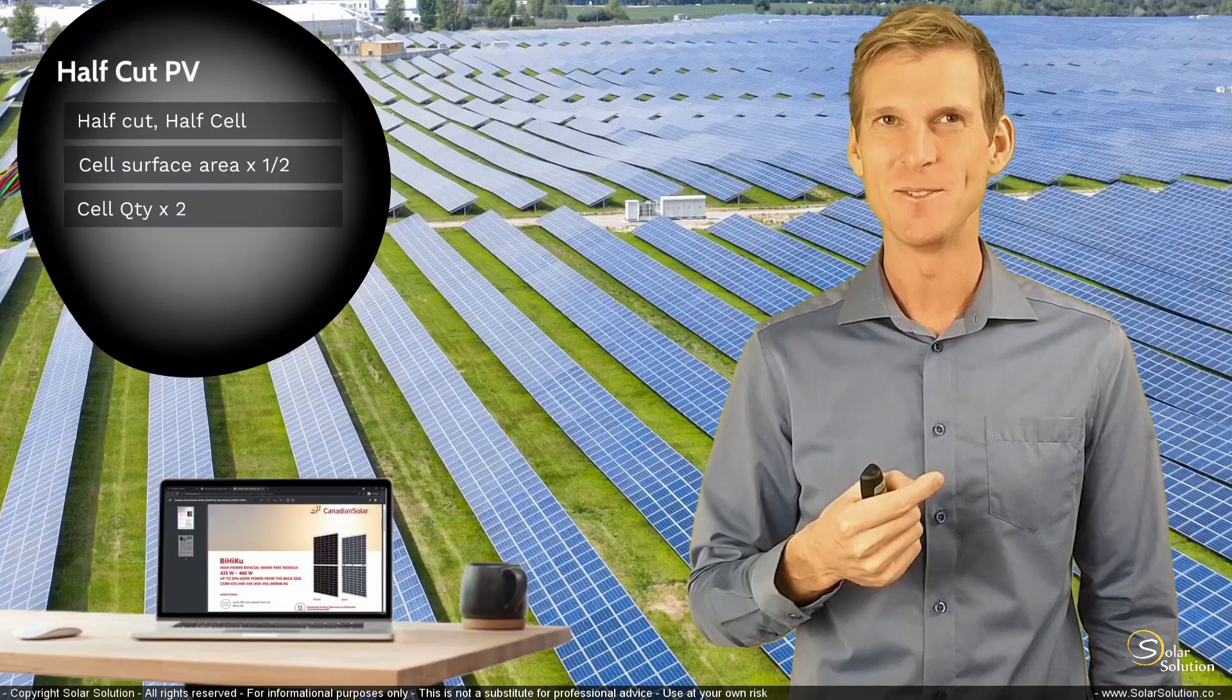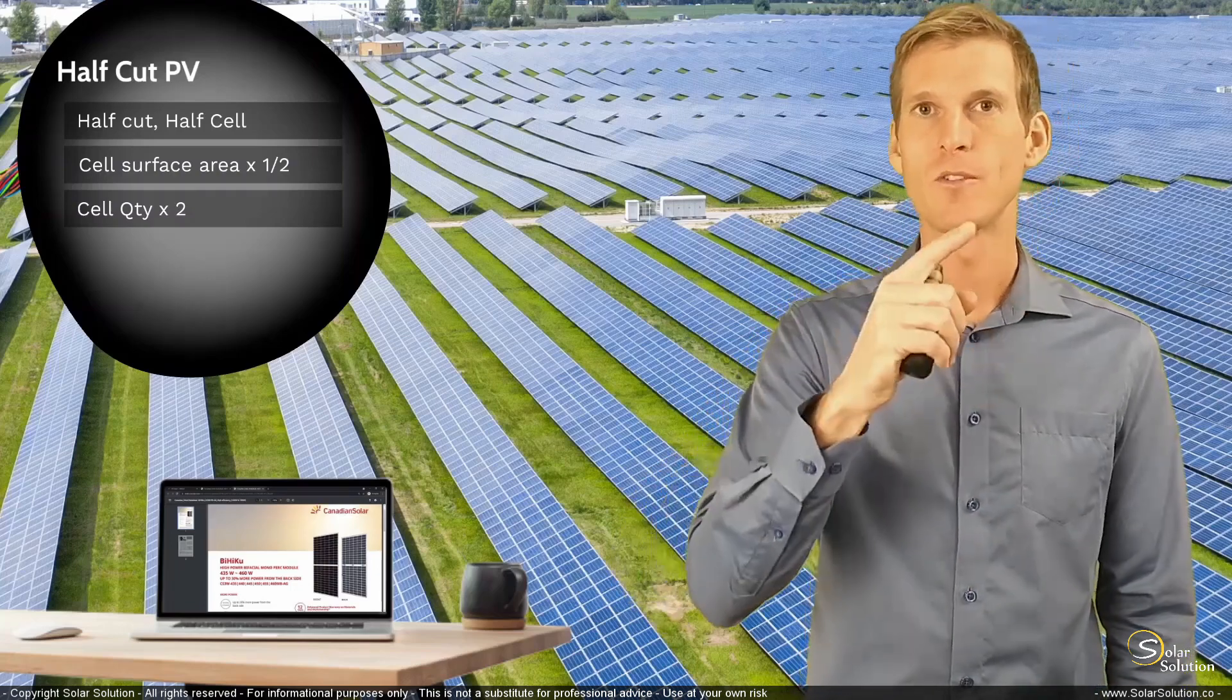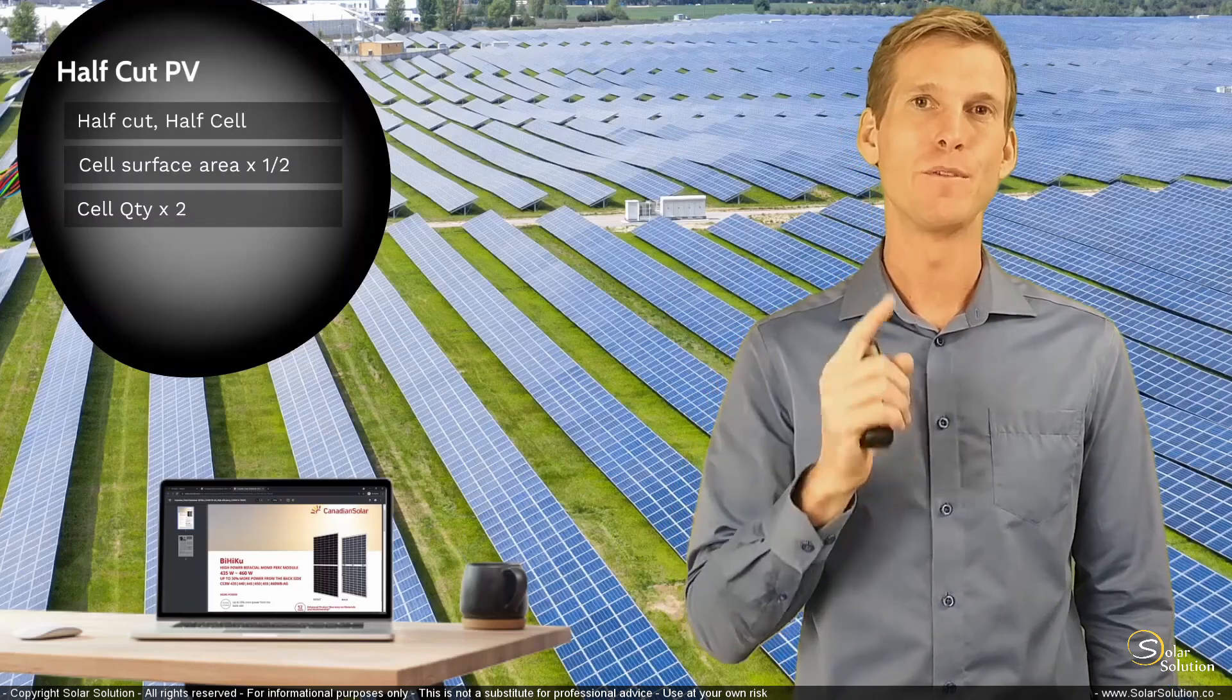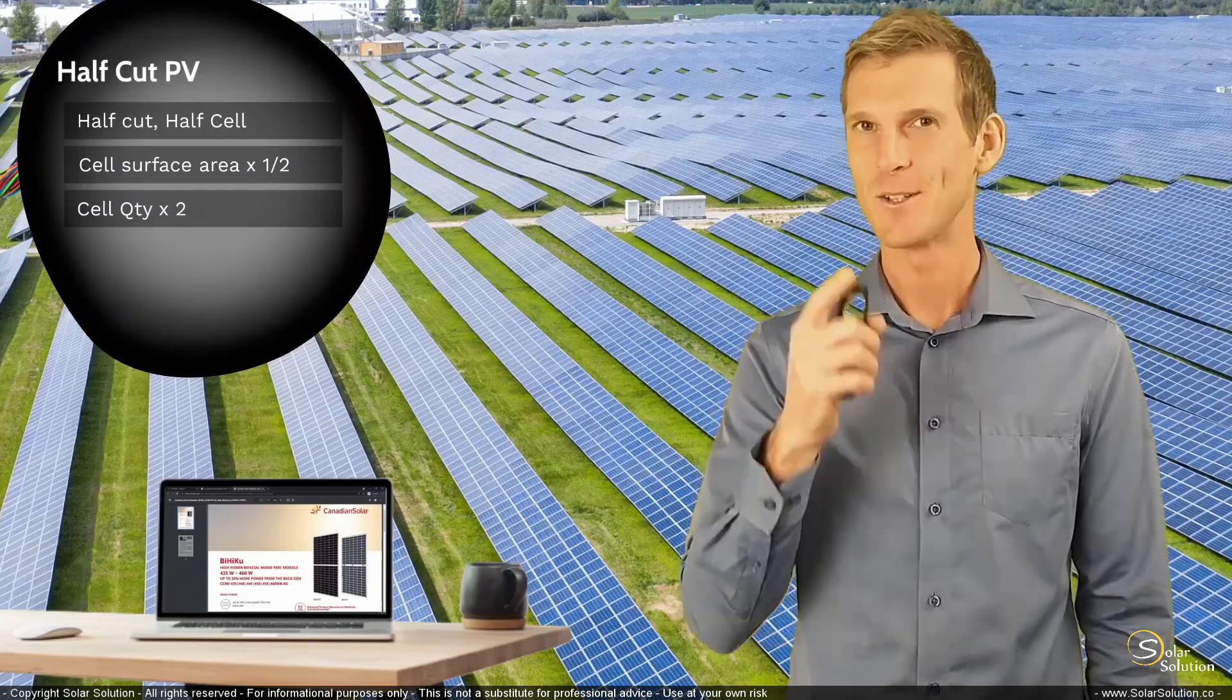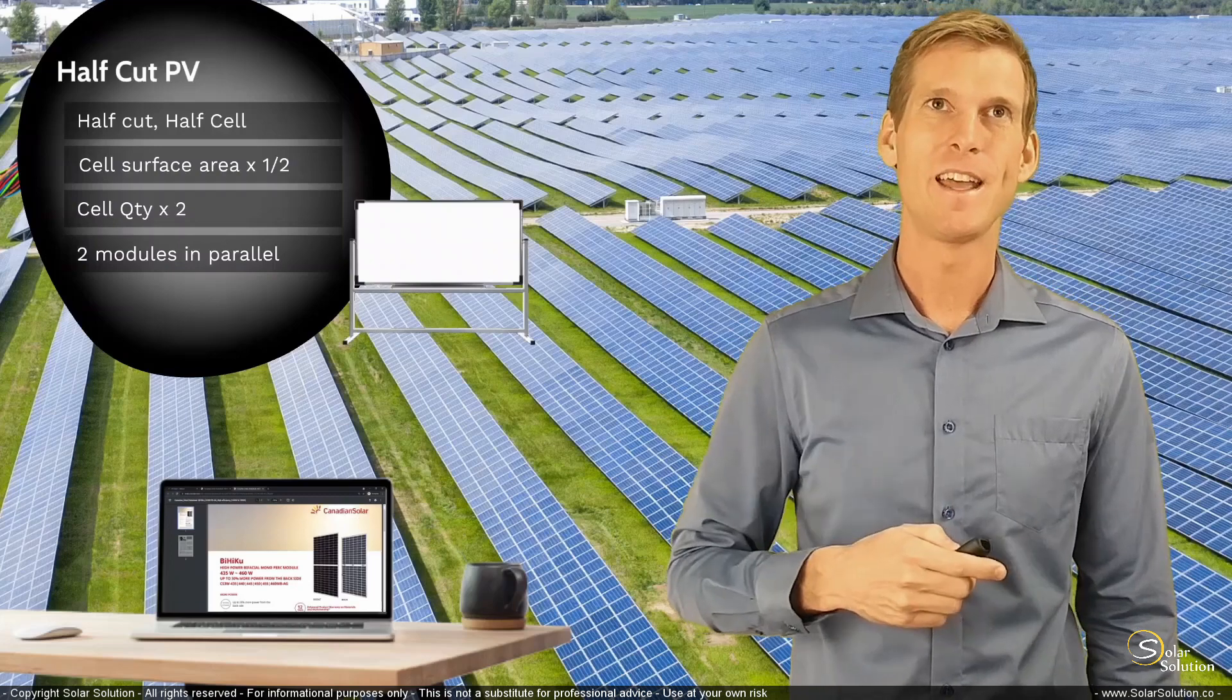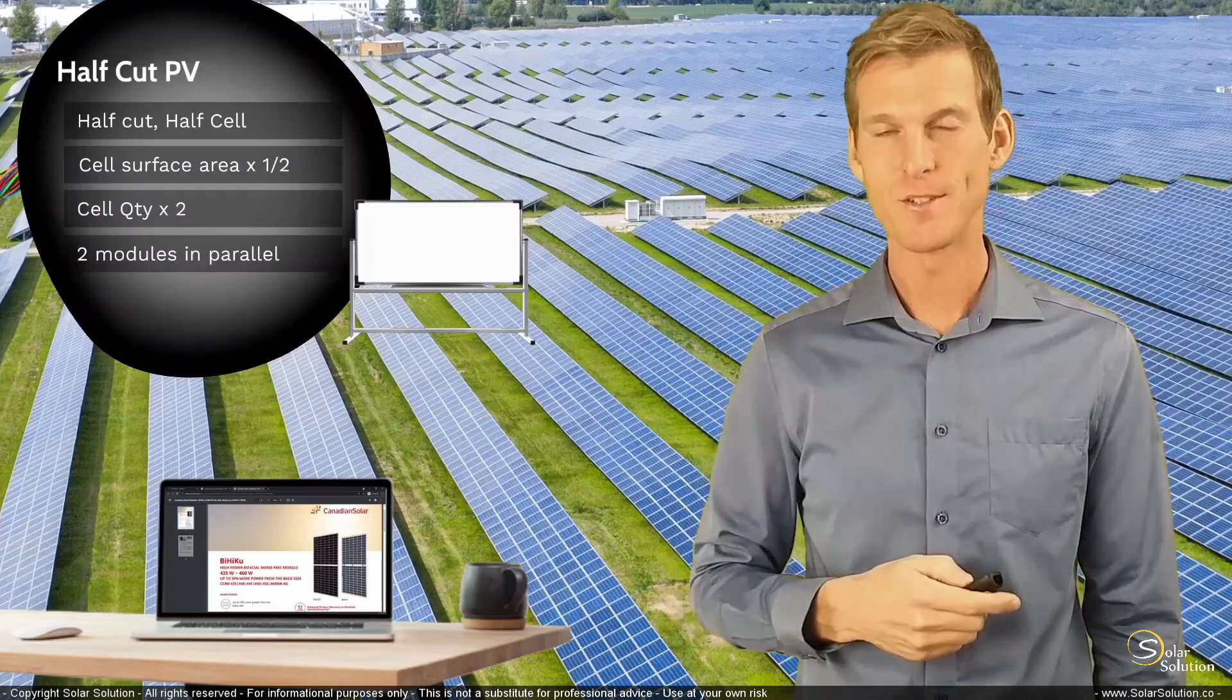Sounds a bit weird, right? Why would you do that? Because now we also take all these cells, and instead of one long string, one long series connection of all the cells, we actually couple them both in series and in parallel. So why would you do this? What would be the advantage of half-cut photovoltaic modules? Let's go to the whiteboard again and let me show you exactly what is being done and why you would do this.